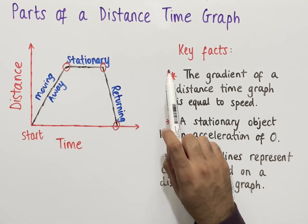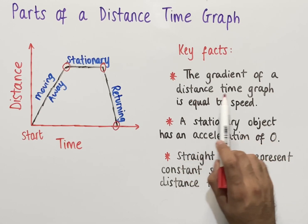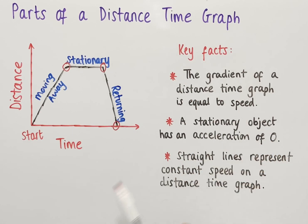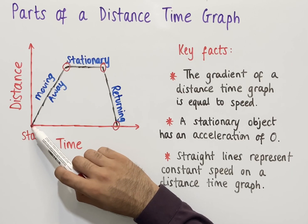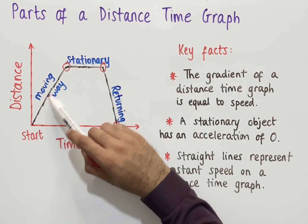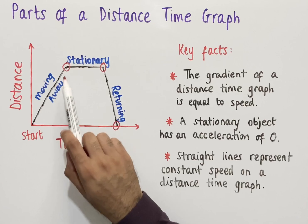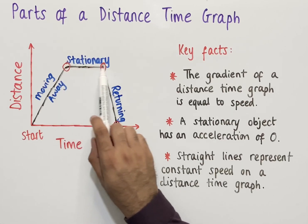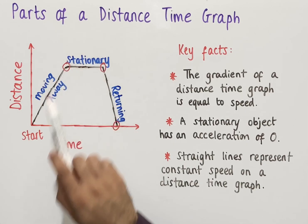Some key facts linked to distance-time graphs are the following. The gradient of a distance-time graph is equal to the speed. In other words, if we work out the gradient of the first initial line we find the speed at which the object is moving away from the start. If we work out the gradient of the flat horizontal line we find it equals zero, meaning the speed is zero and the object is stationary.